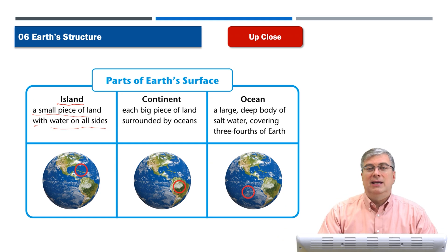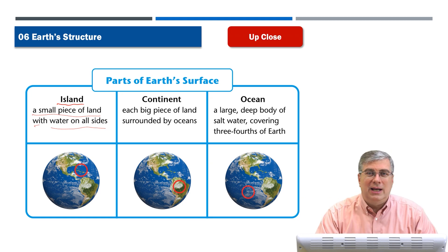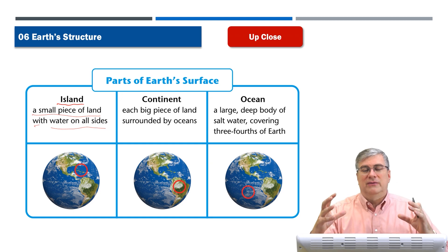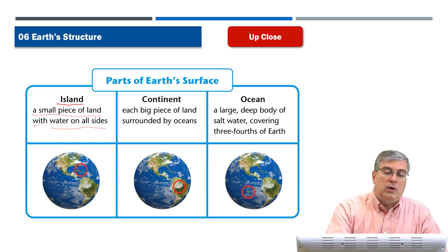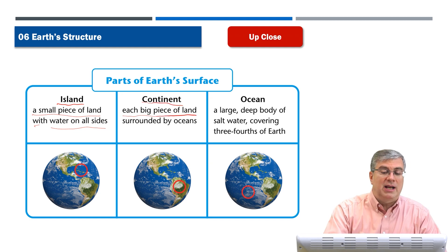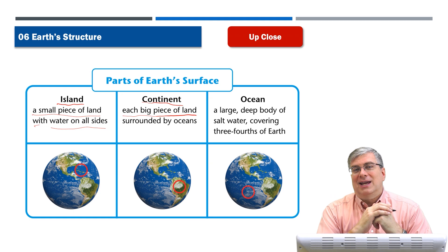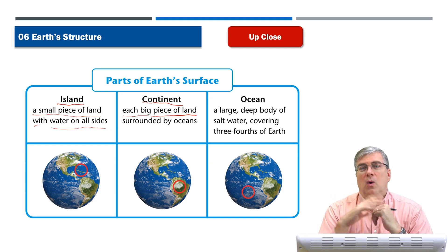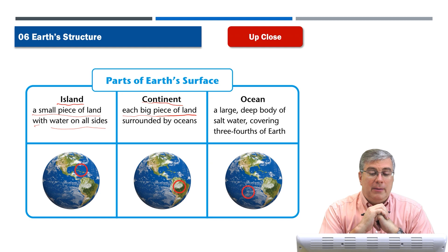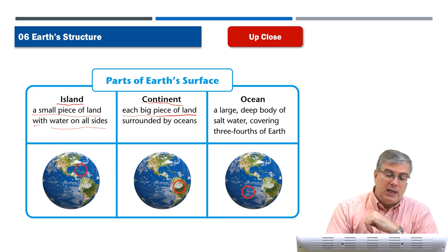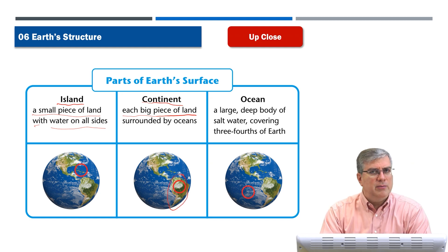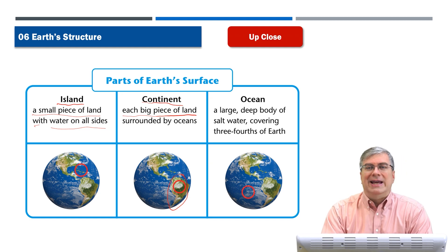Continents are also surrounded by water, but we don't really call them islands because they're so big. Usually an island is smaller — you can cross the island in a car very easily; it's not a very big piece of land. A continent is a very big piece of land — it's huge. It would take days, months, years to walk or drive across a continent, but it is also surrounded by oceans.